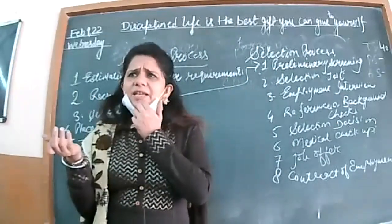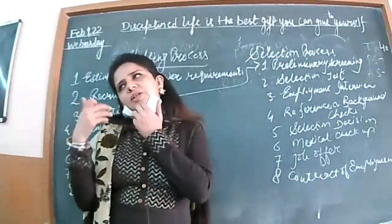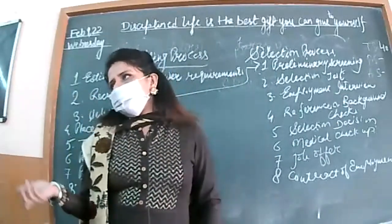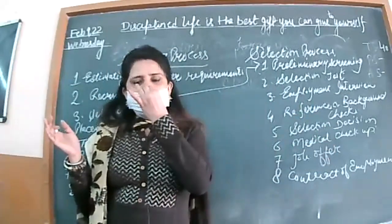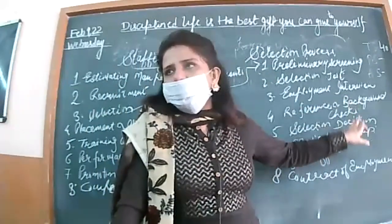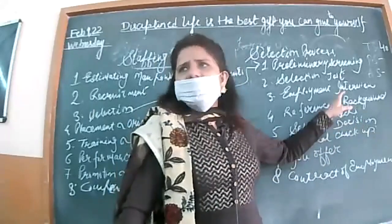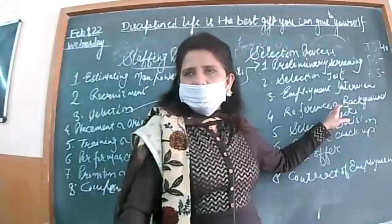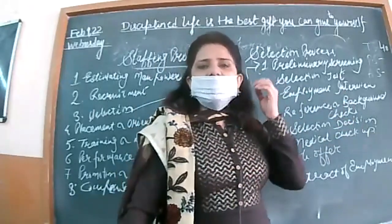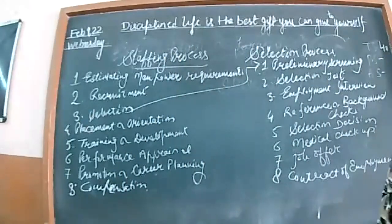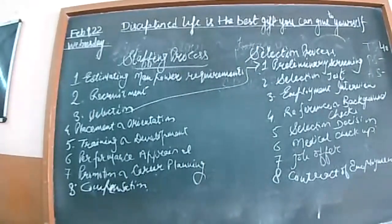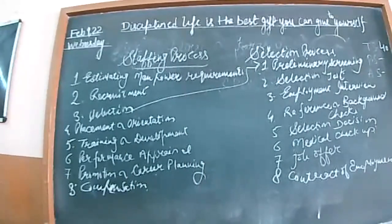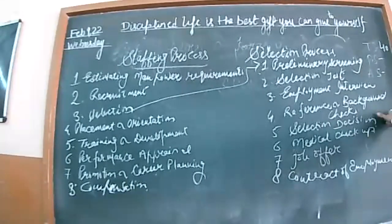The interviewer and interviewee both exchange their information with each other. Then reference and background check - that is the fourth step. Selection decision comes when you feel satisfied after calling the references. Reference contact numbers we ask to fill in the application form. Background check means we contact previous employers to check how the person has done. Then selection decision - now you will decide whether to select or reject. In case he is selected...